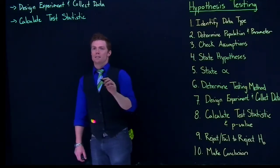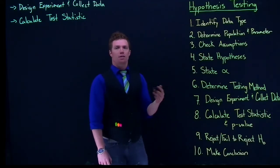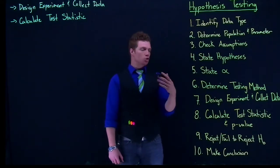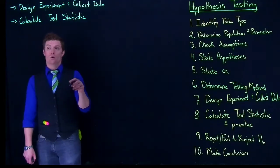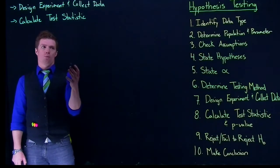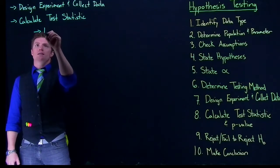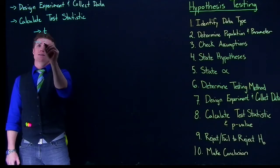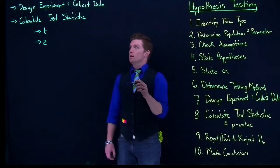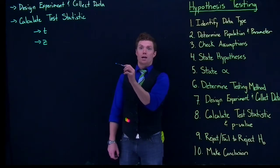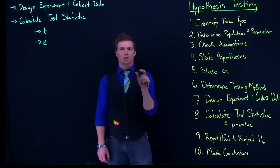When we calculate our test statistic, it helps us know how strange of a result we saw, given that the null hypothesis is actually true. When we calculate these test statistics, you actually already know basically how to do this — you've done it before, we just didn't call it a test statistic yet. We're going to calculate a t value or a z value depending on the testing method we use. The equations change just a tiny bit.